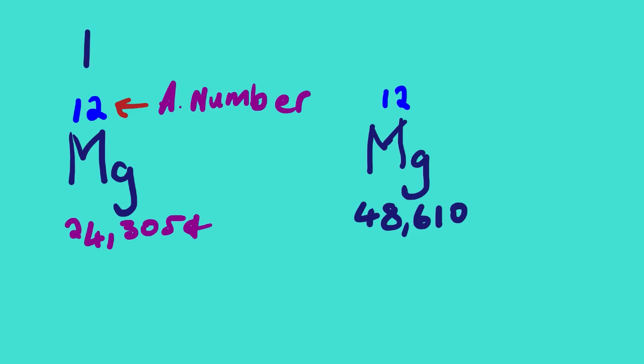Let us start with our first example — magnesium. To know how many neutrons we have, we use specific equations. Let me add from lesson 101: the equation to calculate the number of protons. Number of protons is simply equal to the atomic number.